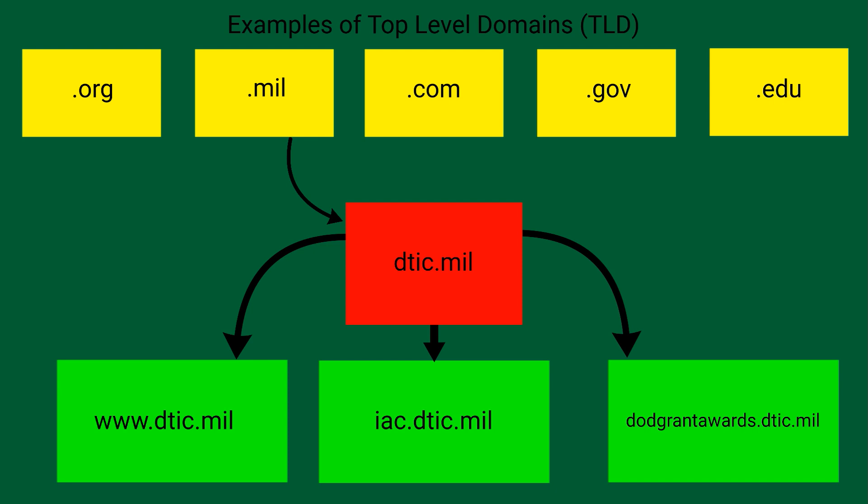But how does this help us identify phishing? The important part to notice is that the organization immediately follows the top-level domain from right to left. So IAC is found within DTIC, and DTIC is found within .mil. Let's see some examples.